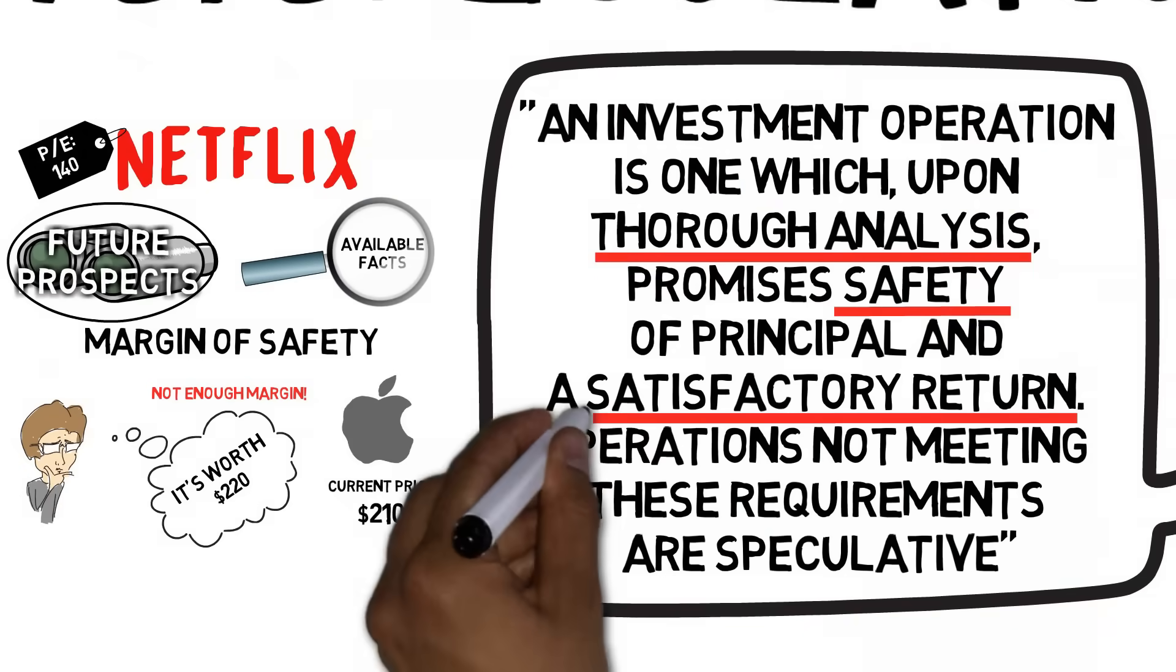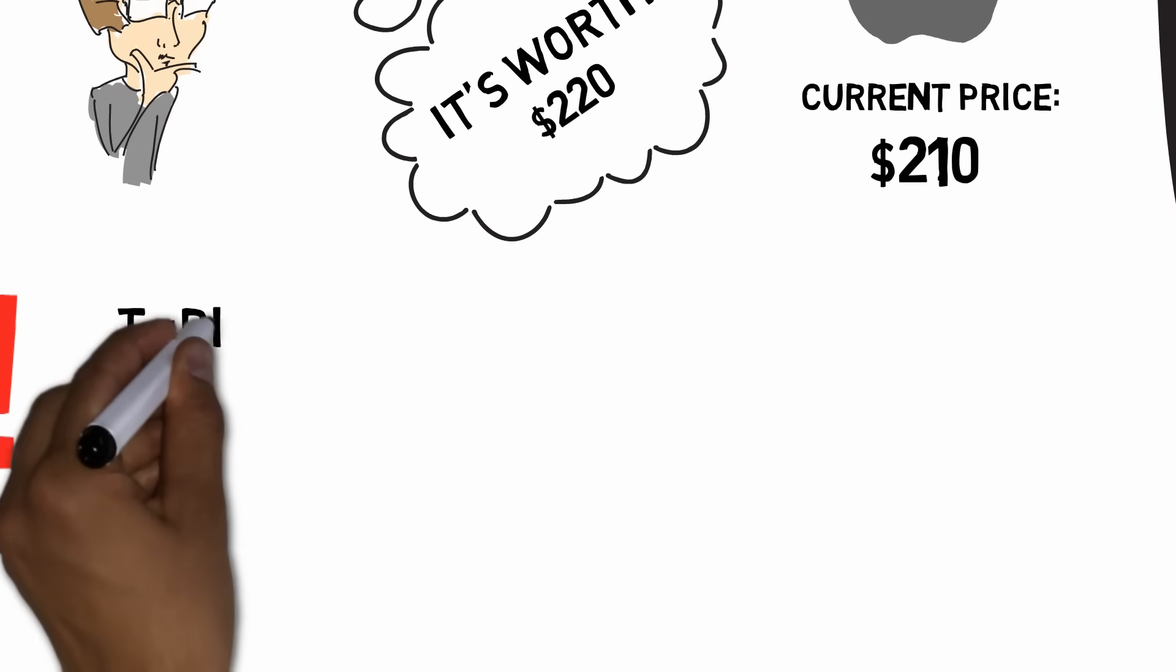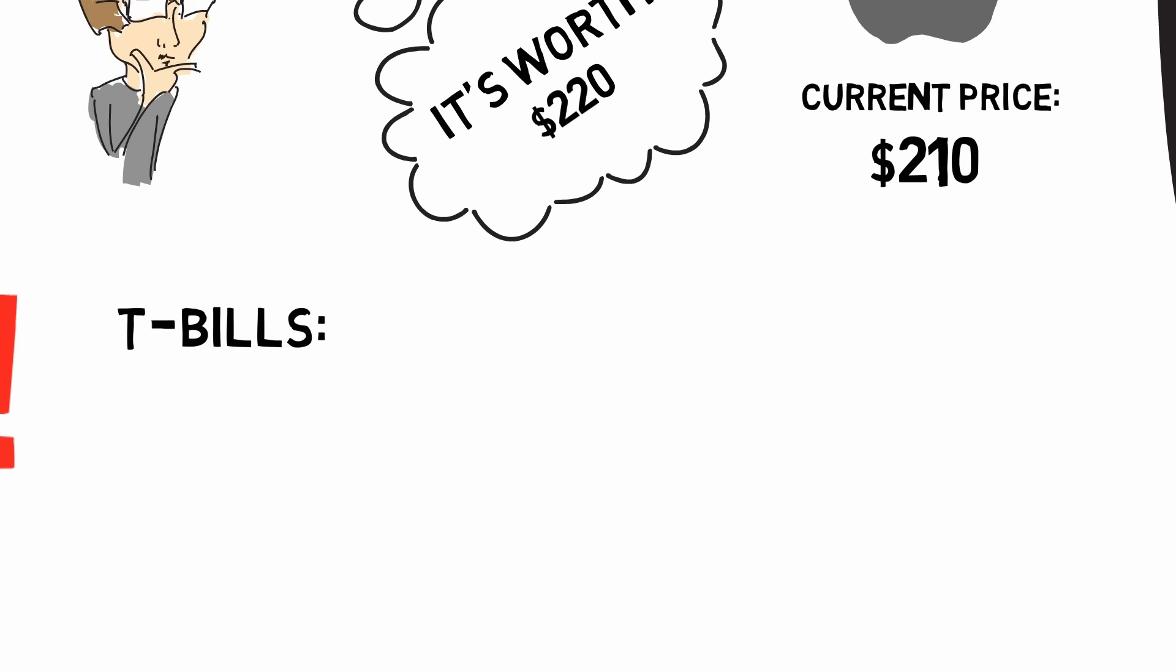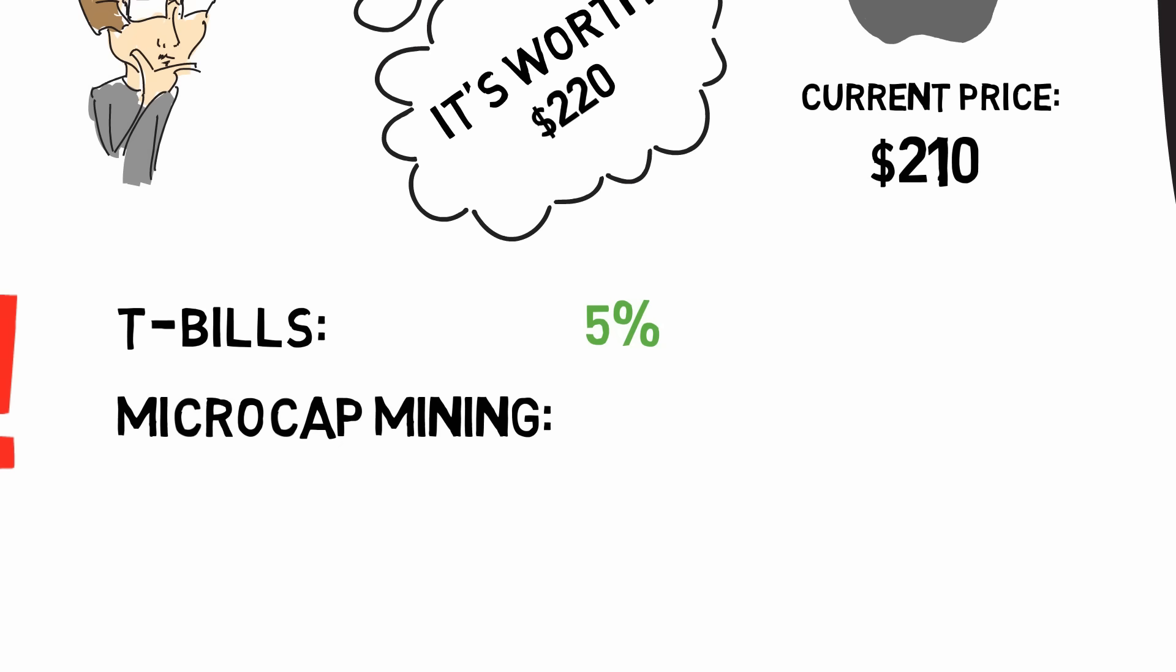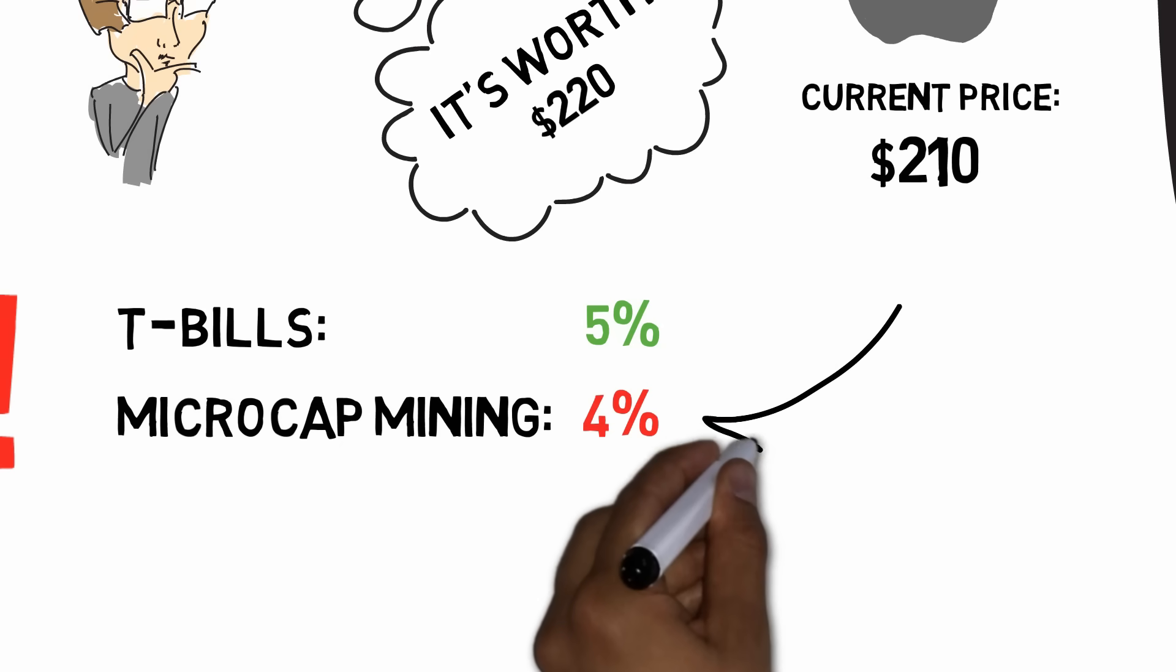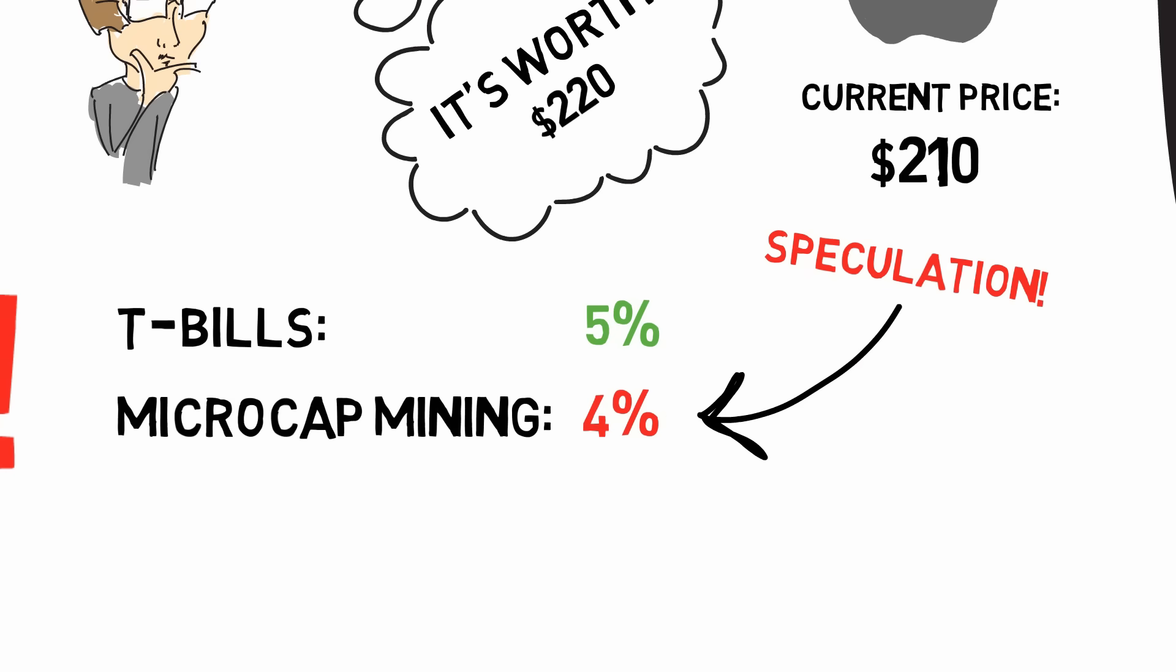A satisfactory return is truly subjective. Any return that the investor is willing to accept will actually do here, as long as he acts with some kind of intelligence. If it's possible to acquire US Treasury bills at a 5% annual return, but for some reason he decides to invest his money in a micro-cap mining stock at an expected 4% return, it would fail to be regarded as an investment operation, even if he has safety and a thorough analysis in place.